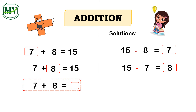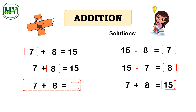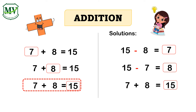Lastly, 7 plus 8 equals the unknown number. We add 7 plus 8 equals 15. That means 15 is the unknown number.